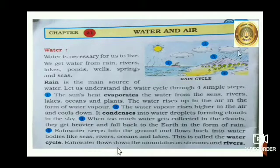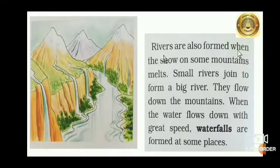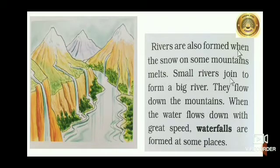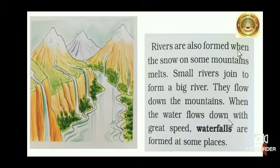Rain water flows down the mountains as streams and rivers. Rivers are also formed when the snow on some mountains melts. Small rivers join to form a big river. They flow down the mountains. When the water flows down with great speed, waterfalls are formed at some places.